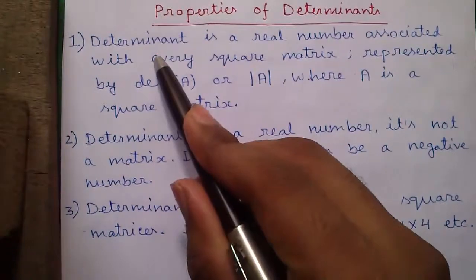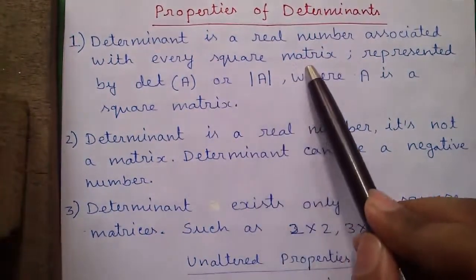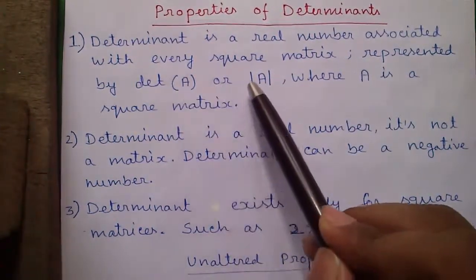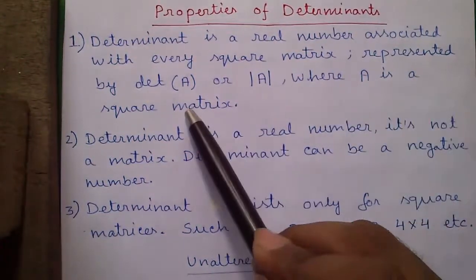Our first property: determinant is a real number associated with every square matrix represented by det of A or mod of A where A is a square matrix.